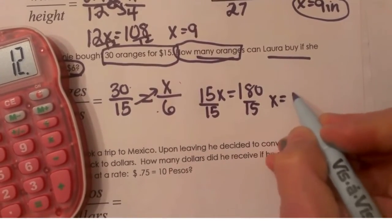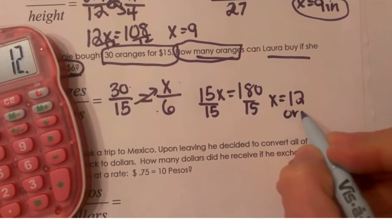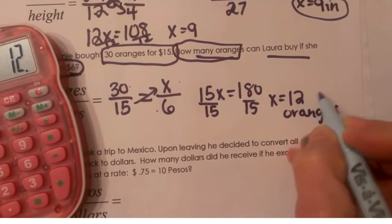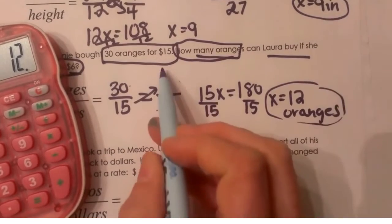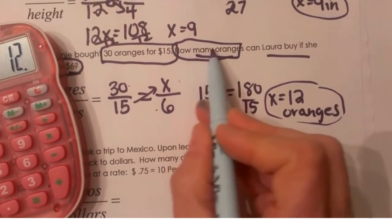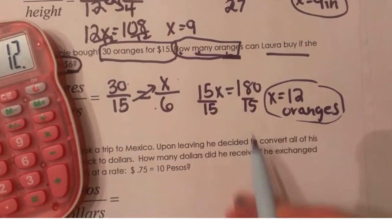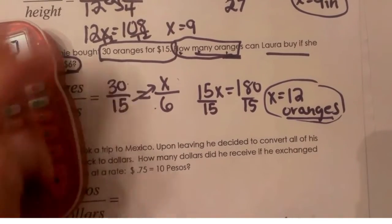And so 180 divided by 15 is 12. So she can buy 12 oranges. And always put your unit measure. If you forget what your unit measure is go back into the question and look what it's asking. How many oranges? So that's my unknown and that means my unit measure will be oranges.